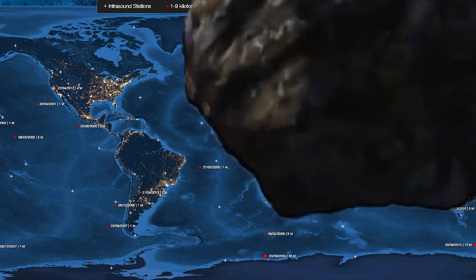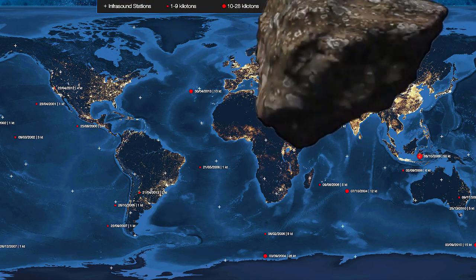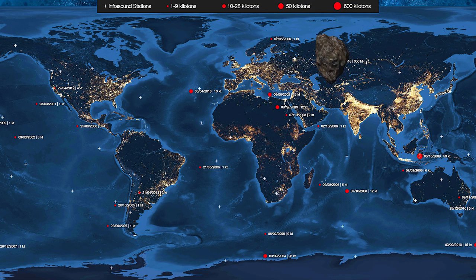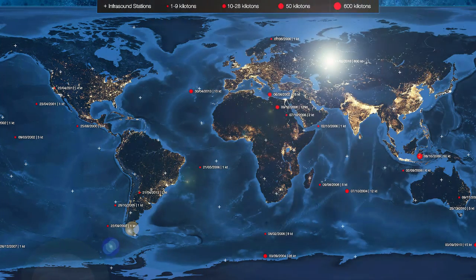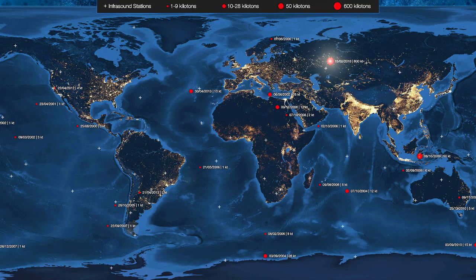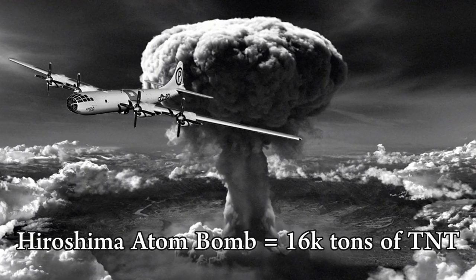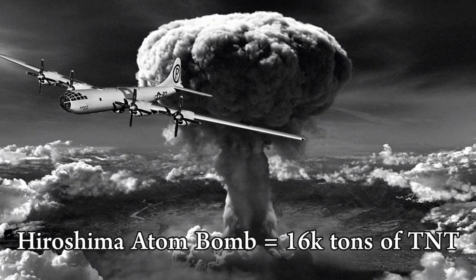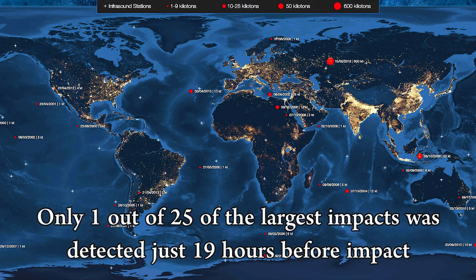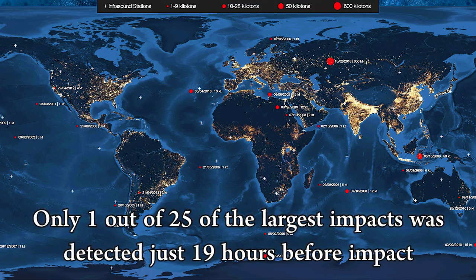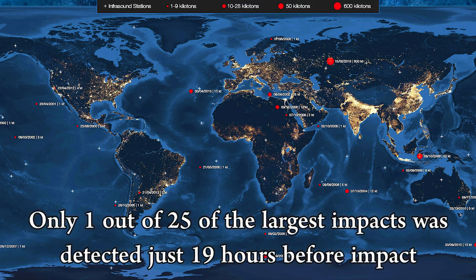Between 2000 and 2013 there were 25 asteroid impacts with blast forces ranging from one kiloton to 600 kilotons. Eight of those were equal to or greater than the Hiroshima atom bomb which was equivalent to 16 kilotons of TNT. Of those 25 asteroids only one was detected just 19 hours before it hit the Earth.